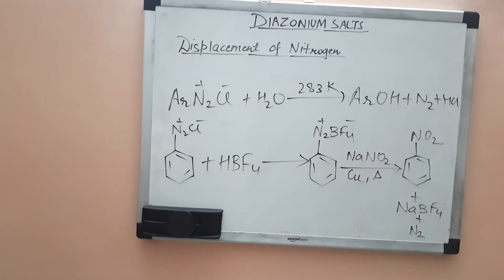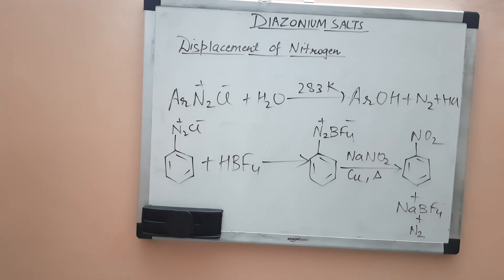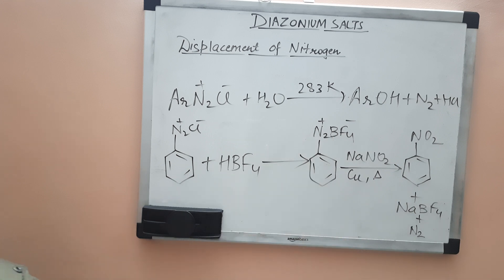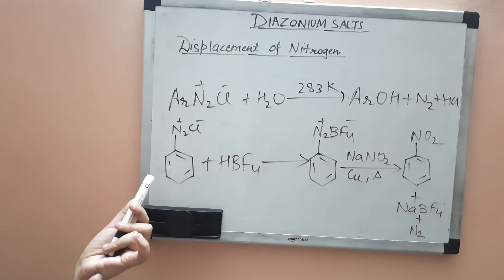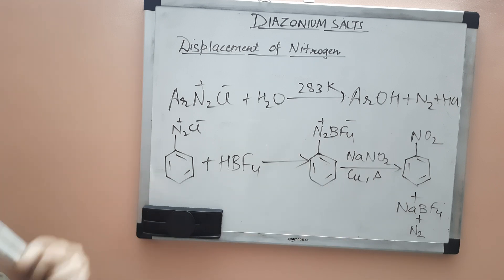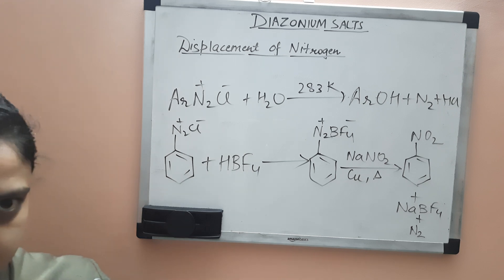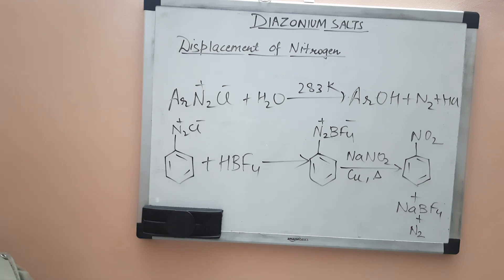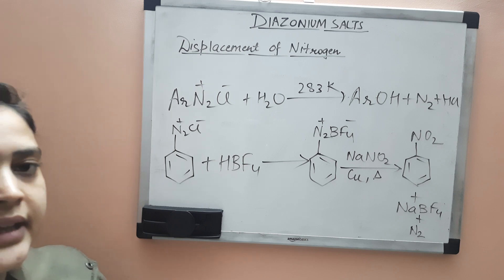So today we displaced nitrogen from diazonium salts by introducing iodide, fluoride, hydrogen, hydroxide, and NO2 into the aromatic ring. In the next lecture, we will study coupling reactions. I hope you have understood today's topic. Thank you.